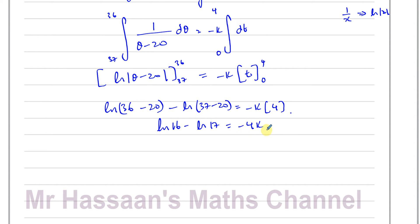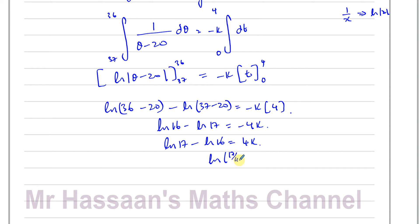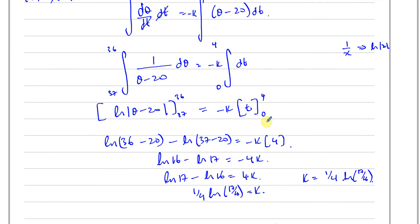So if I want to find K, multiplying both sides by minus 1 gives ln(17) minus ln(16) equals 4K. Therefore K equals one quarter times ln(17/16). I'll leave K in this exact form for now as we'll need it later.